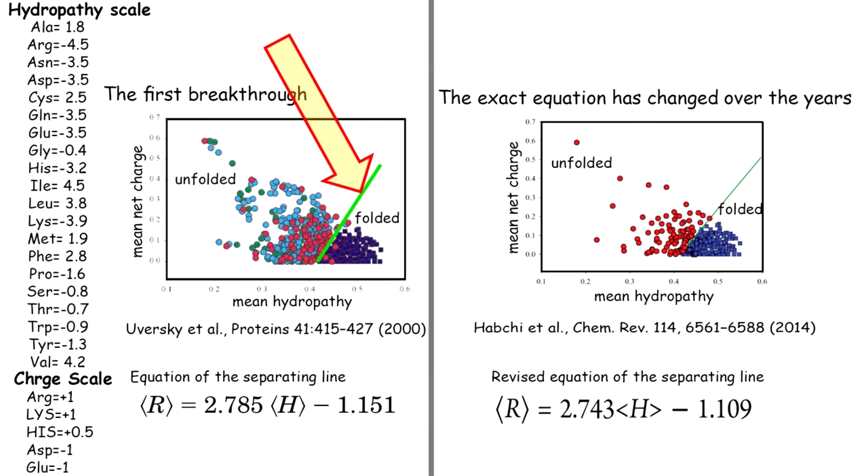The separating line denotes the optimum net hydropathy required for spontaneous folding for a given net charge under physiological conditions. You can see the equation of this separating line in the left. This plot is sometimes referred to as the Uversky plot and this separating line as the Uversky line.